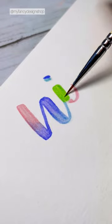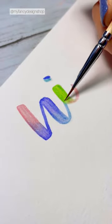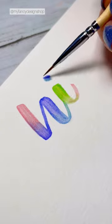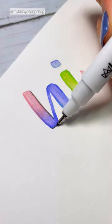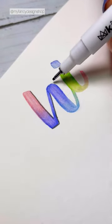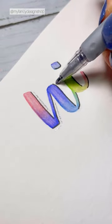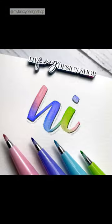After it dries, you can add some details. Here I'm just adding a drop shadow, and then I'm also going to add a little bit of sparkle. That's an easy, quick way to blend with Pentel brush pens.